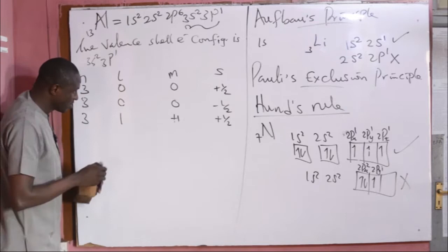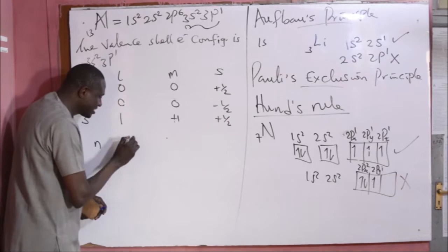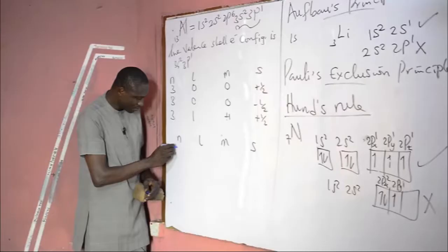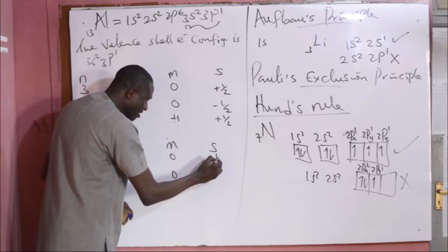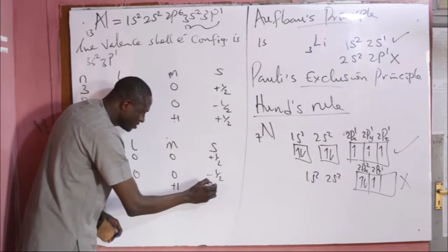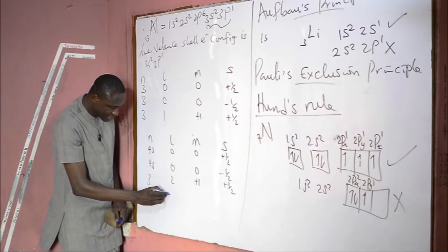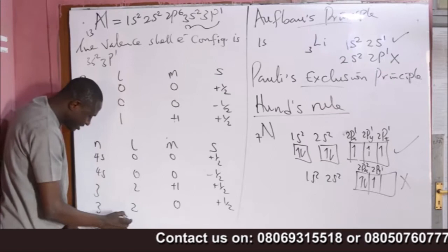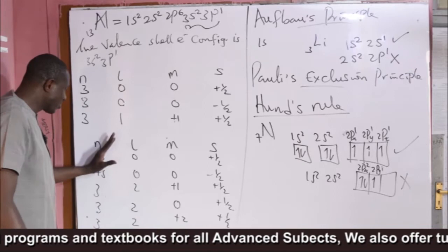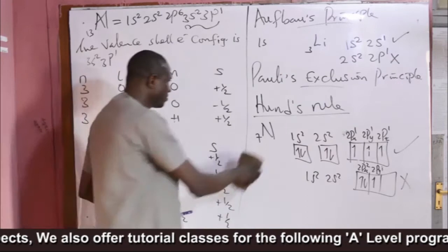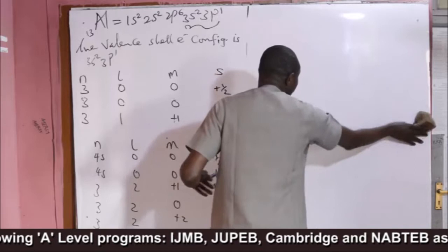Another example: suppose you are given the possible set of four quantum numbers for the valence shell electrons of an atom as follows — (4, 0, 0, +½), (4, 0, 0, −½) for two electrons in 4s, and then (3, 2, +1, +½), (3, 2, 0, +½), (3, 2, +2, +½) for three electrons in 3d. The question asks you to write the full electronic configuration of the atom whose valence electrons have this set of quantum numbers.